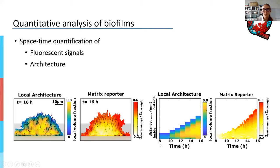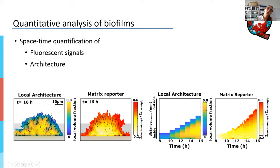These properties can all be measured locally, which means we can follow them over time and in space, and we visualize them in kymographs. On one axis — the x-axis — you have time, and on the y-axis you have a spatial component, here the distance to the surface, going from the deep core of the biofilm outward. So you can see not only how the signal changes over time, but also how it changes depending on where you are in the biofilm. For example, this matrix reporter shows that the signal is much stronger outside than it is inside.